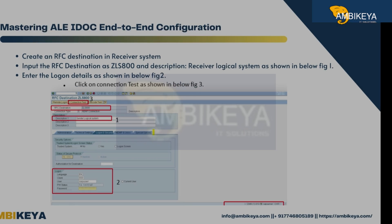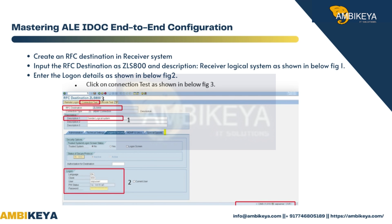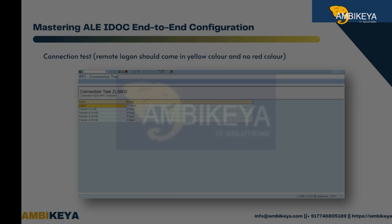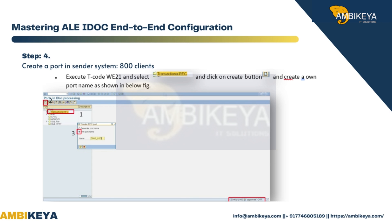Create an RFC destination in the receiver system. Input the RFC destination as ZLS800 and description as receiver logical system, as shown in figure 1. Enter the logon details as shown in figure 2. For the connection test, the remote logon should come in yellow color and no red color.